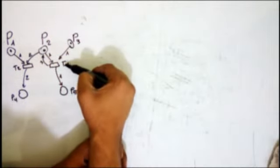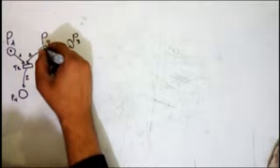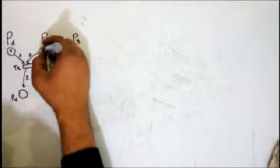When we fire T1, we remove one token from this place and one token from this place. Then for the outputs, we add one token here and three tokens here.